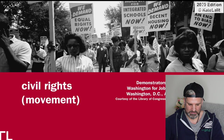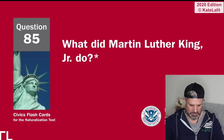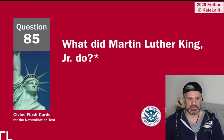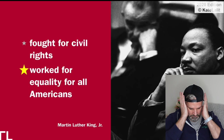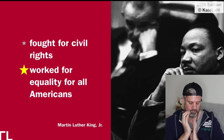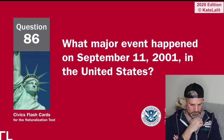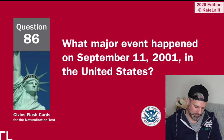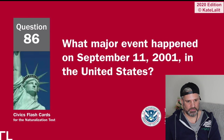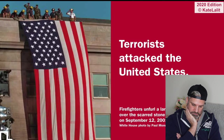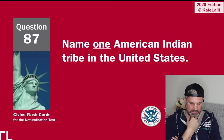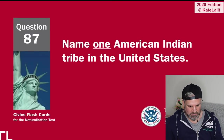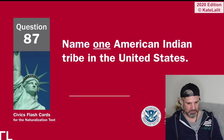What movement tried to end racial discrimination? Civil rights movement. What did Martin Luther King Jr. do? He was promoting rights for all American citizens, fought for civil rights, work for equality for all Americans. What major event happened on September 11, 2001 in the United States? It was a terrorist attack on the Twin Towers — terrorist attack against the United States.